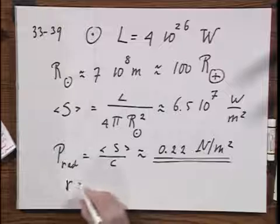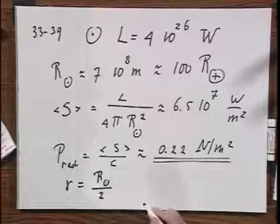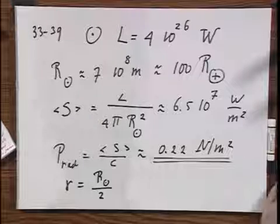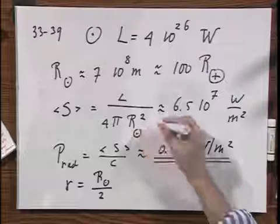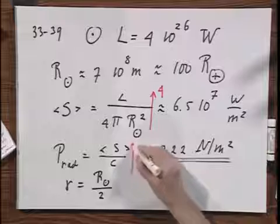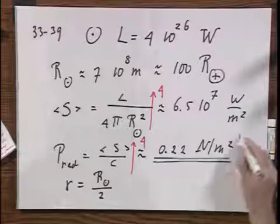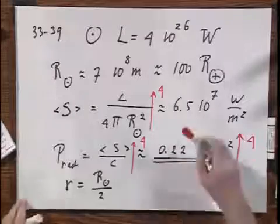If you take one half the radius of the sun — so you go inside the sun — then the Poynting vector will be 4 times higher, because if r is twice as small, this term goes up by a factor of 4, and so the radiation pressure will be up by a factor of 4. But in both cases, the radiation pressure is insignificant compared to the gas pressure, as is given by Professor Birchinger in this particular problem.